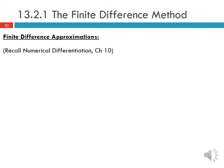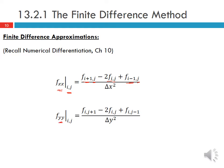Now we need to write the finite difference approximations using the same formulations discussed in the numerical differentiation chapter. The second derivative of f with respect to x at point (i,j) is given by fixing j and using the centered finite difference on i: (f_{i+1,j} - 2f_{i,j} + f_{i-1,j}) / delta x squared. The second derivative in the y direction similarly holds i constant and uses the centered finite difference for j: (f_{i,j+1} - 2f_{i,j} + f_{i,j-1}) / delta y squared. These are the second-order accurate central difference formulas.